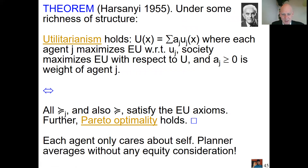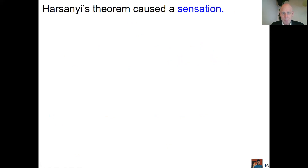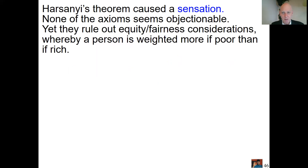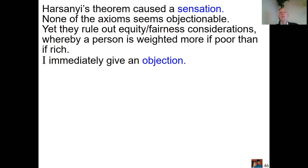There is no interaction between agents — every agent is happy only for their own utility and does not care about the others. There is no equity consideration. Many people were surprised the theorem held and objected, saying it is not a good model. For instance, whether somebody is rich or poor does not seem to matter, because the same weight a_j is applied to an agent regardless of whether the agent is rich or poor. That looks strange.